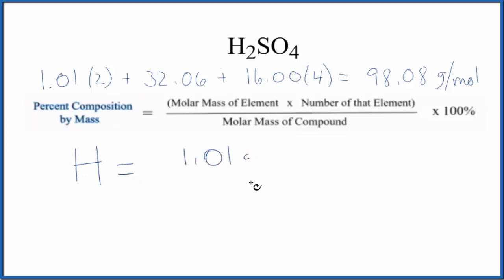The number of hydrogen atoms - we have two of them, so we multiply that by 2. Then we divide this whole thing by the molar mass of the compound. We'll multiply that by 100 to give us the percent.